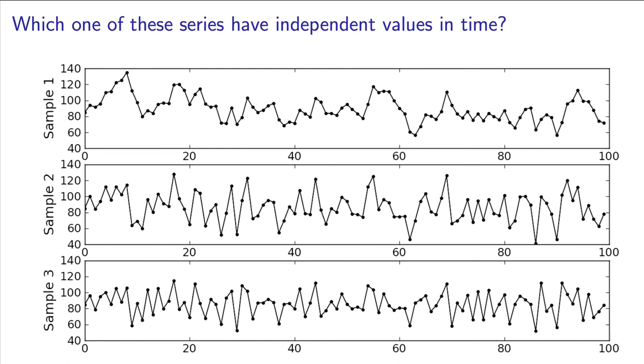People reject sample 1 as being independent, because you can see trends in the data. It moves slowly up and down, and therefore violates the requirement that samples have no relationship with each other.